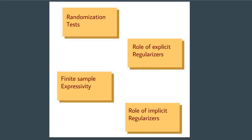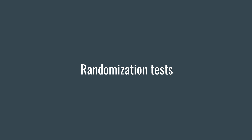This was done by running some randomization tests, explaining the role of explicit and implicit regularizers in generalization, and analyzing the expressive power of neural nets on a finite sample. They used a variant of the well-known randomization test from non-parametric statistics as a core idea of their methodology.